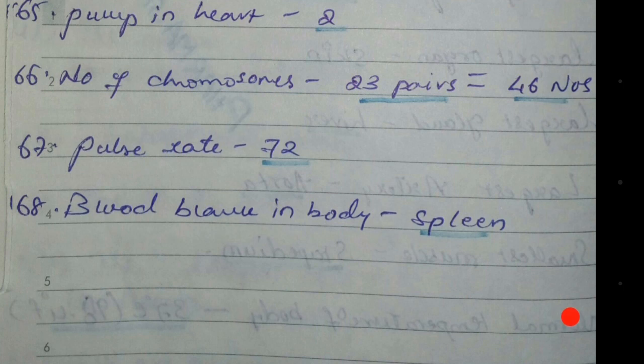Pulse rate: the heartbeat is 72 beats per minute. Coming to the next: the blood bank in the body is the spleen.